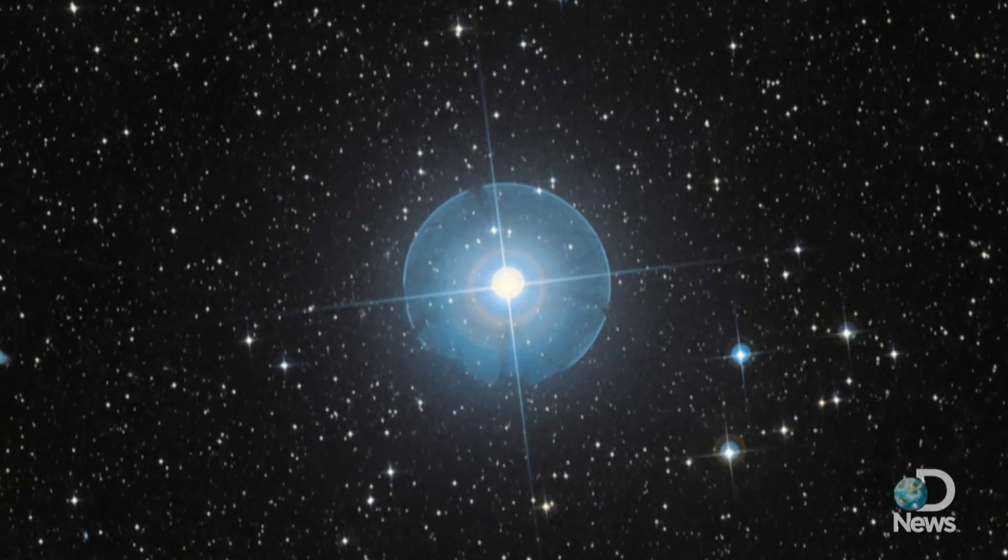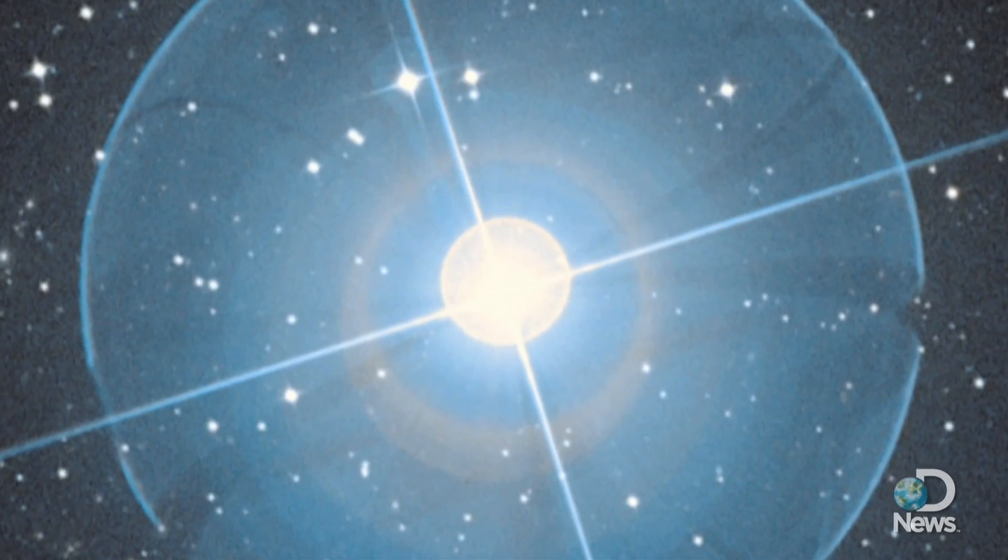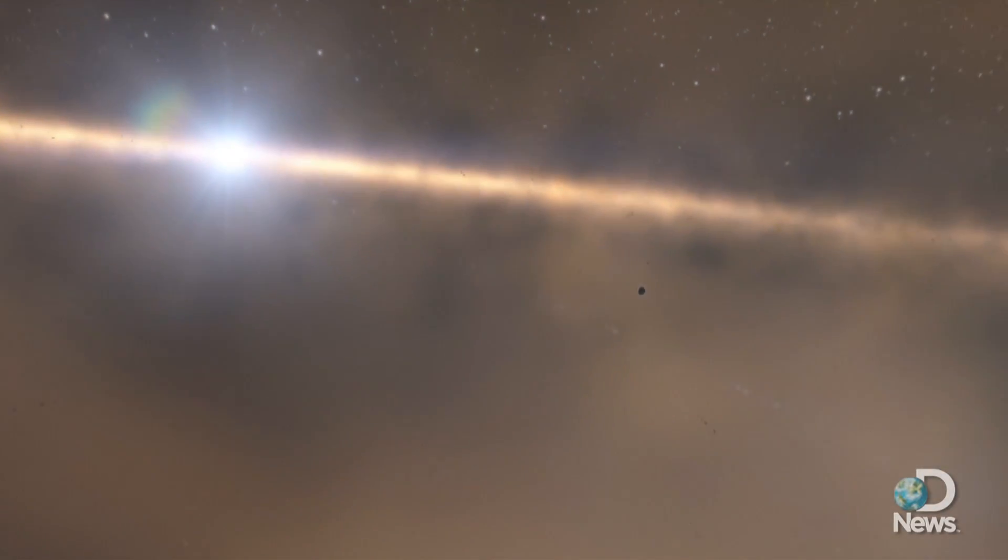Meet Beta Pictoris, a 12-million-year-old star that's 3,000 times younger than our 4.6-billion-year-old Sun, but already giving birth to planets.